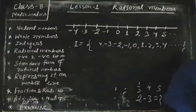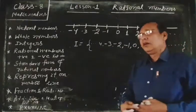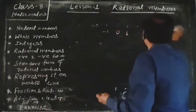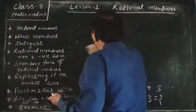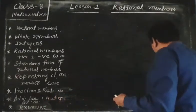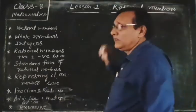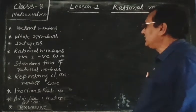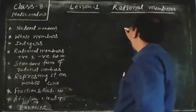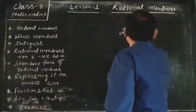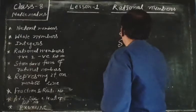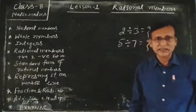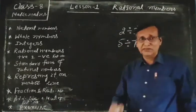Now we come to the conclusion. After understanding these numbers, we find that natural numbers, whole numbers, and integers are still not sufficient to answer questions like 2 divided by 3 or 5 divided by 7. This group of numbers is not sufficient to answer such questions.